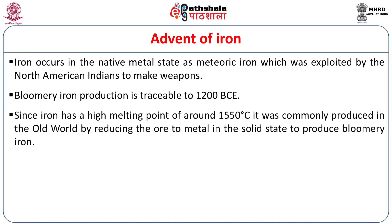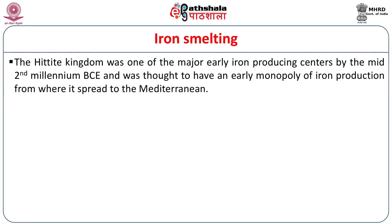Since iron has a very high melting point of about 1550°C, it was commonly produced in the old world by reducing the ore to the metal in the solid state to produce bloomery iron, and shaft furnaces were used to produce the iron bloom. It has been thought that the Hittite Kingdom was one of the major early iron-producing centres by the mid-second millennium BCE, and was thought to have had an early monopoly of iron production from where it spread to the Mediterranean.